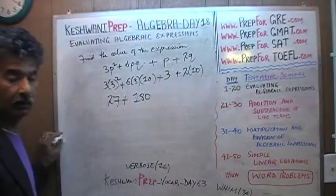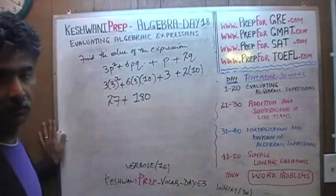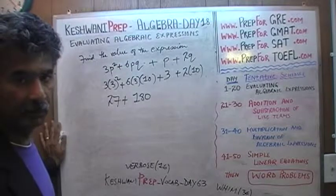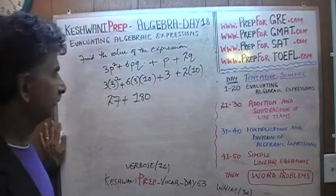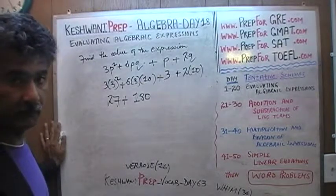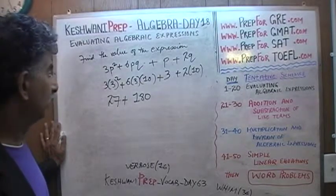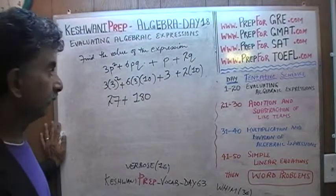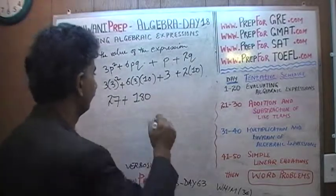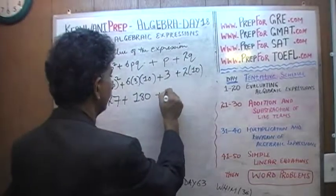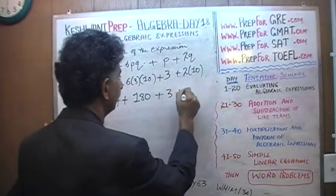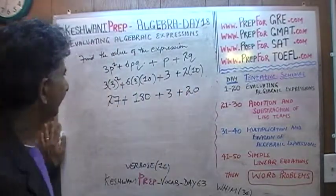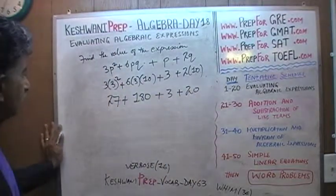Do not reach for the calculator — leave it alone, save the battery as I've said many times before. Save it for a rainy day. So continuing: we also have 3 plus 20. Everything is being added, so we're going to have a large number here.